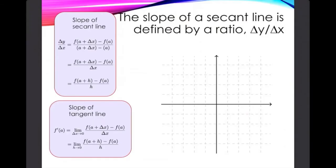I want to work on the slope of secant lines and talk about how that relates to the slope of the tangent line. I'd like to convince you that you already know how to compute the slope of a secant line. If I have two points, I can compute the slope of the line through them. I've got a line through two points and I simply compute rise over run — I'm certain that you know that.